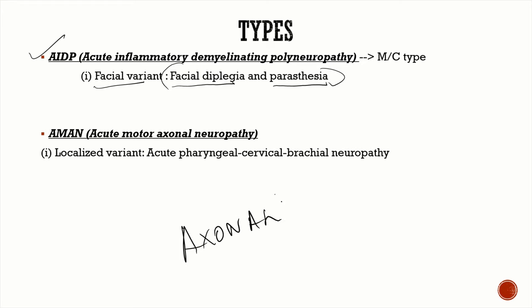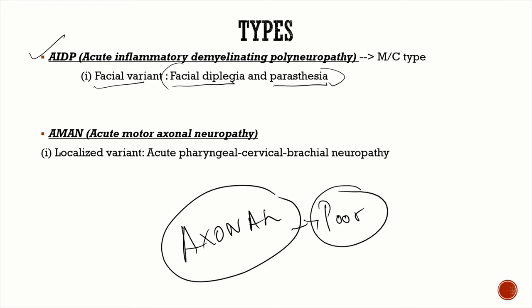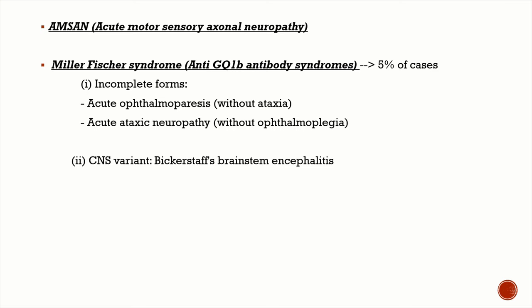There are also axonal varieties of GBS, which have a poor prognosis compared to demyelinating varieties — they have delayed and usually incomplete recovery. The axonal types include AMAN, acute motor axonal neuropathy, with a localized variant called acute pharyngeal-cervical-brachial neuropathy. When sensory involvement is also present, it's called AMSAN — acute motor sensory axonal neuropathy.